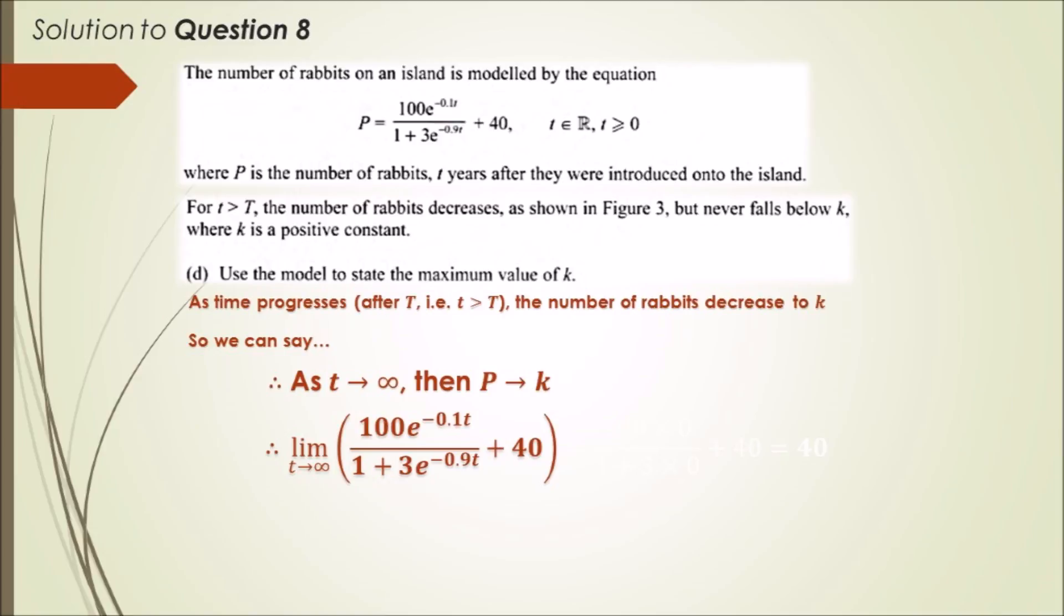So now it's pretty much substituting the values in. We just write that the limit as t approaches infinity of the equation P. We substitute t as infinity, or in the calculator you can just put in a lot of nines - like 9, 9, 9, 9, 9. I just put in about five nines.